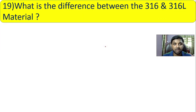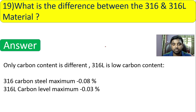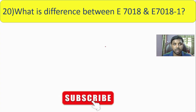Question 19: what is the difference between 316 and 316L material? The only difference is carbon content. 316 has a maximum carbon content of 0.08%, while 316L has a maximum carbon content of 0.03%.